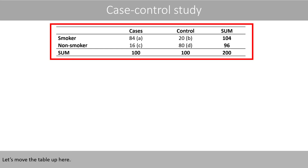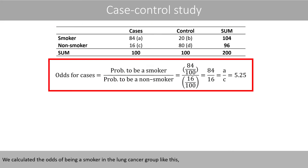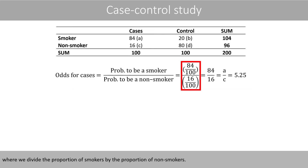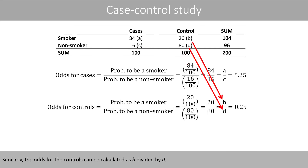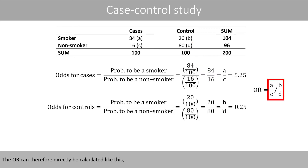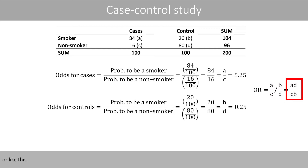We calculated the odds of being a smoker in the lung cancer group by dividing the proportion of smokers by the proportion of non-smokers. Note that we can cancel what we have in the denominators, which means that we can calculate the odds for the cases as A divided by C. Similarly, the odds for the controls can be calculated as B divided by D. The odds ratio can therefore directly be calculated as A times D divided by B times C, or equivalently.